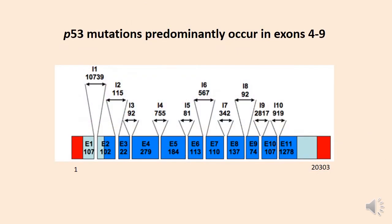What you are seeing here is the structure of the p53 gene. There are 11 exons, starting from E1 to E11. There are 10 introns, starting from intron 1 to intron 10.